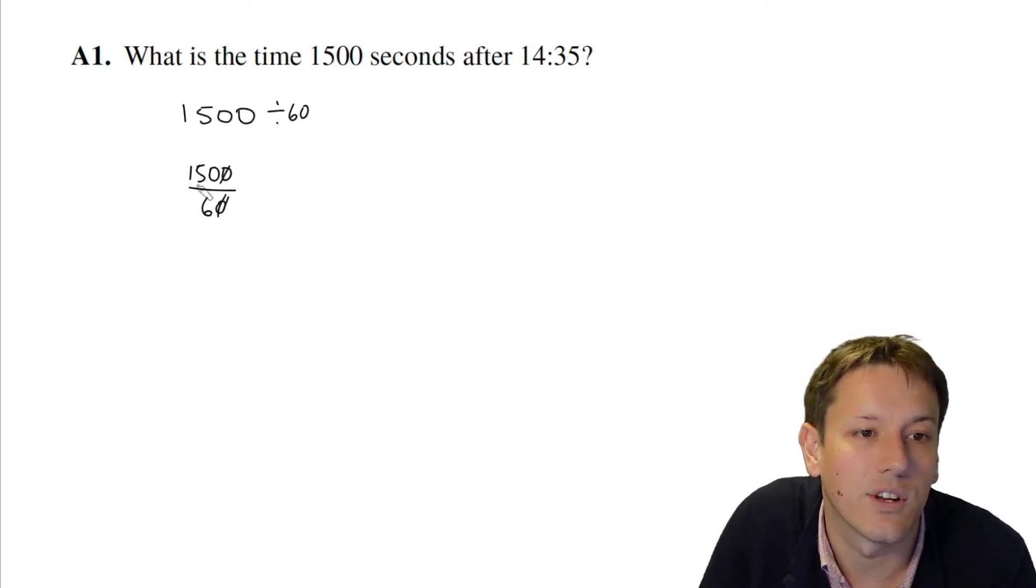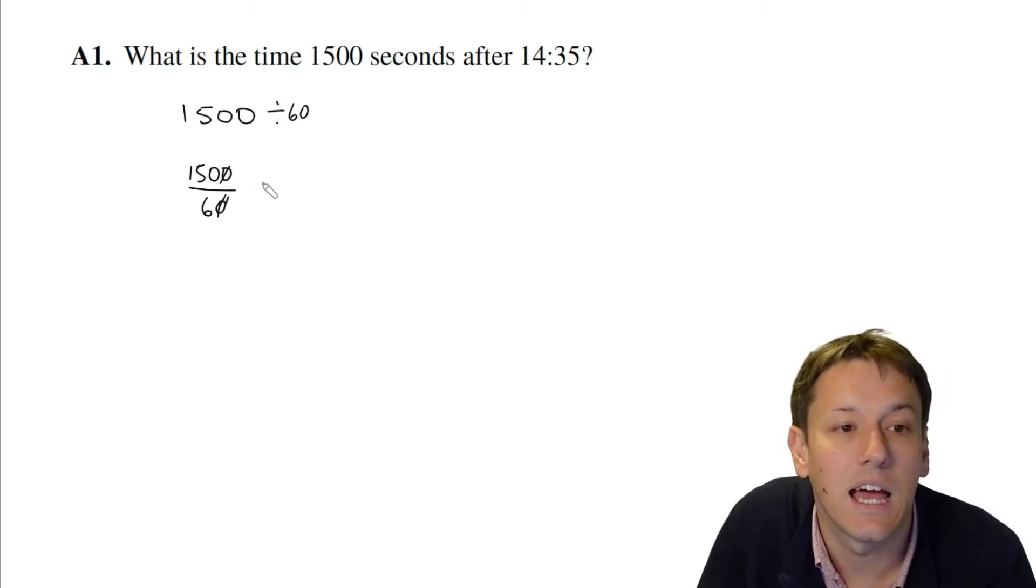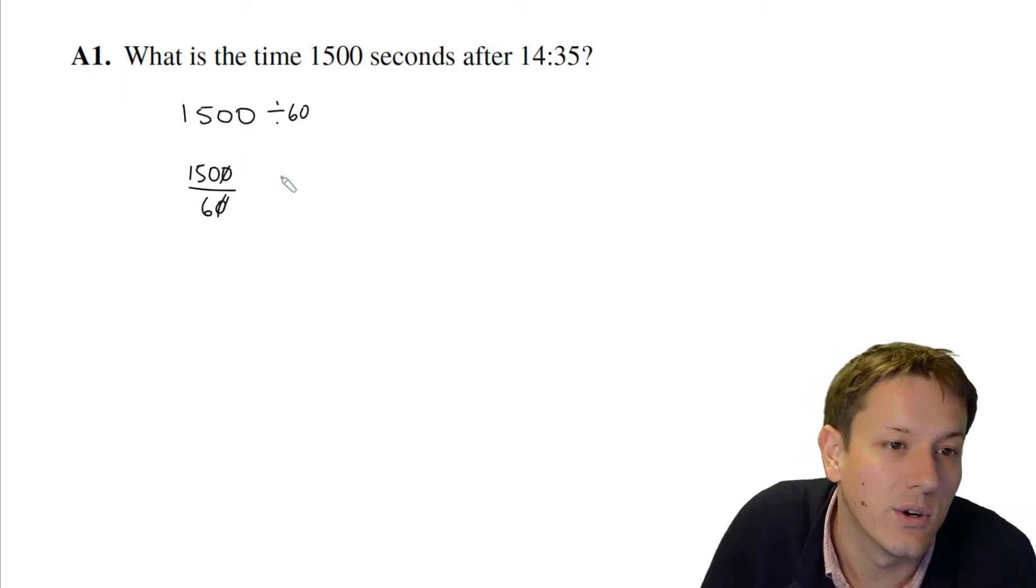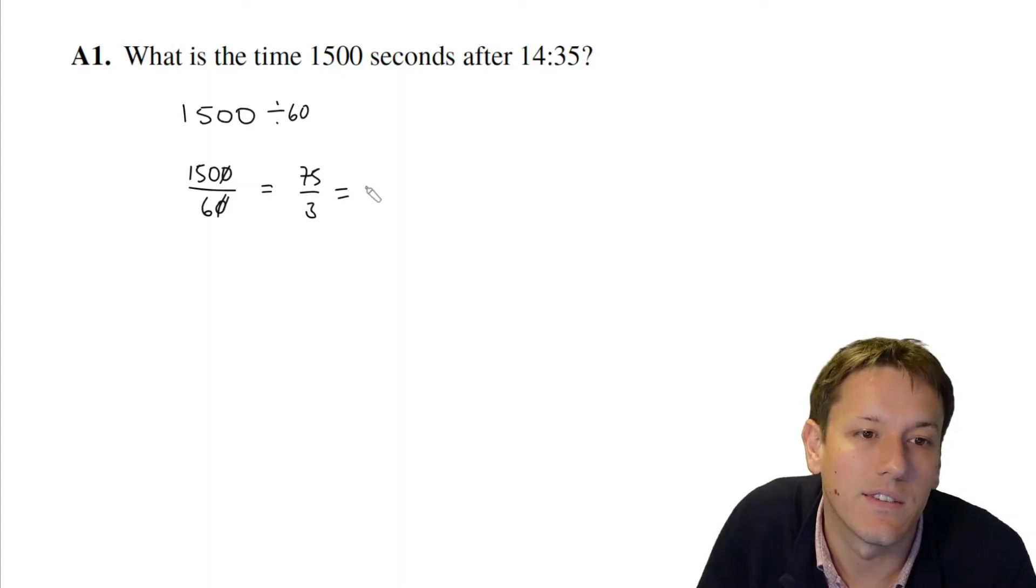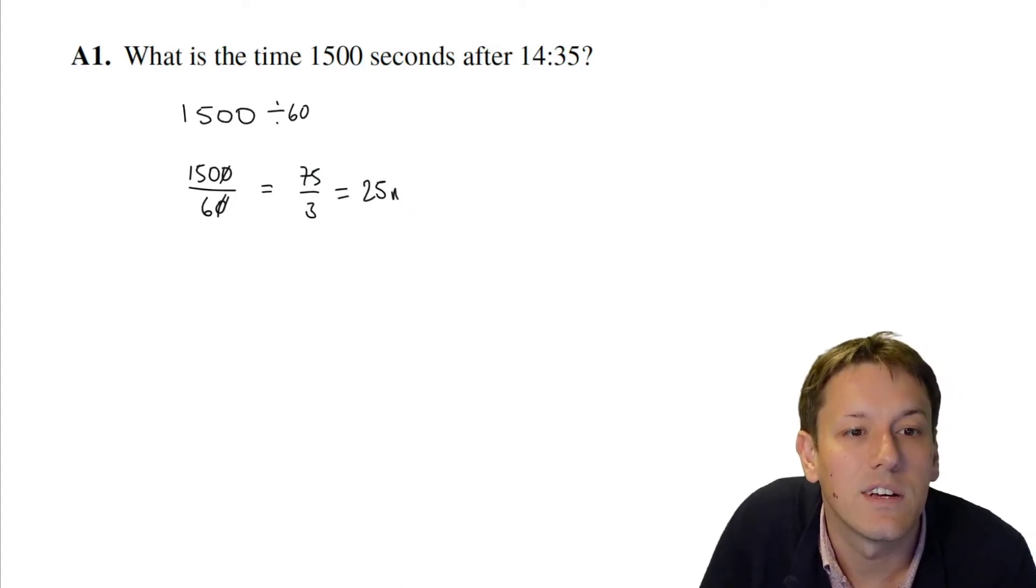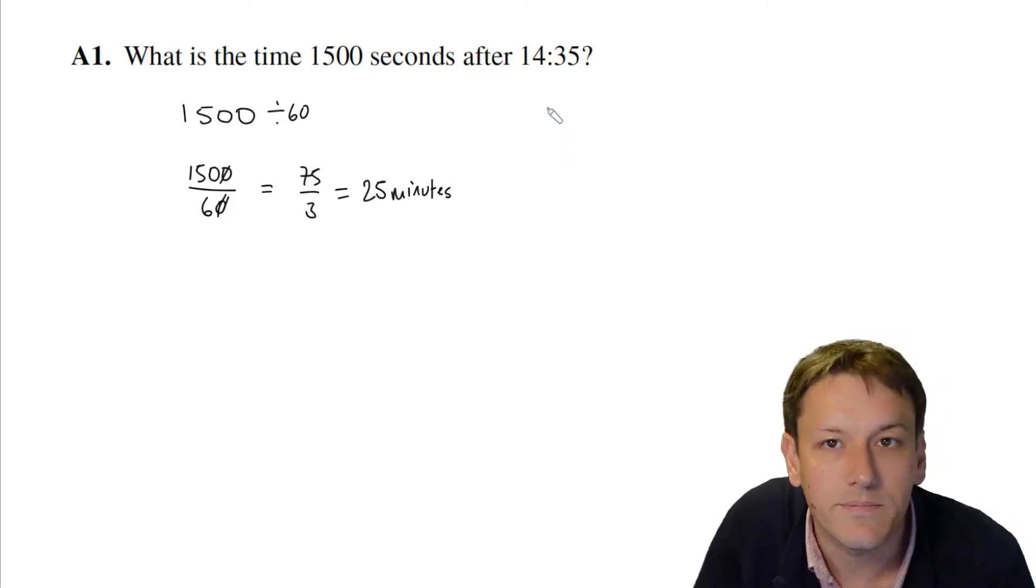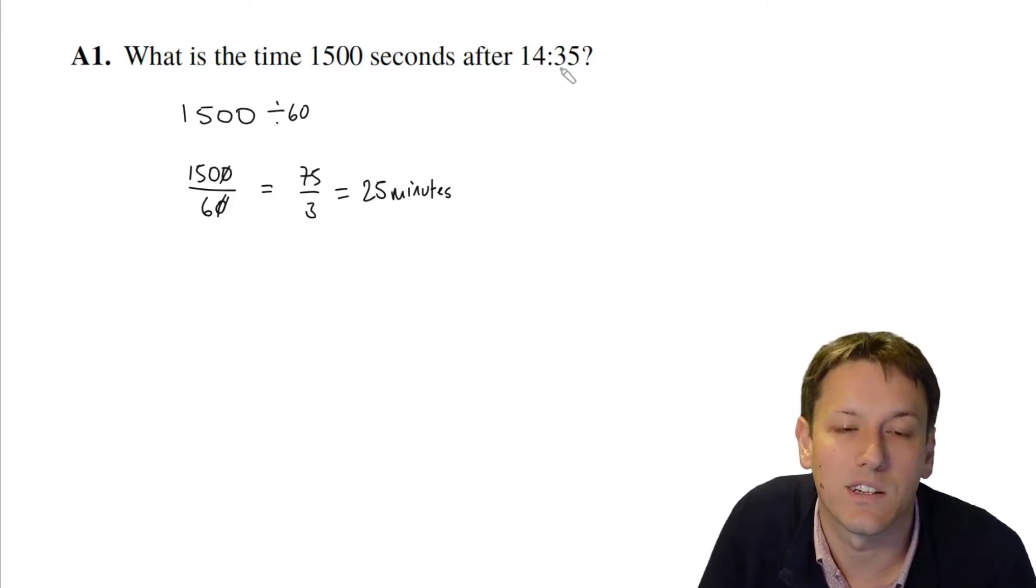You might be able to do that straight away, or you could divide top and bottom by 2 and get 75 over 3, and then 75 divided by 3 is 25. So this is 25 minutes, and 25 minutes after 2:35 takes us to 3 o'clock, or 15:00. So that's the answer.